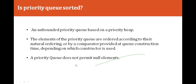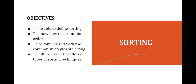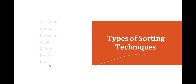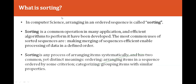Now we'll discuss sorting. The objectives are to define sorting, understand the notion of order, and become familiar with types of sorting techniques: selection sort, bubble sort, insertion sort, shell sort, merge sort, heap sort, and radix sort. In computer science, arranging items in an ordered sequence is called sorting. Sorting is a common operation in many applications, and efficient algorithms to perform it have been developed.